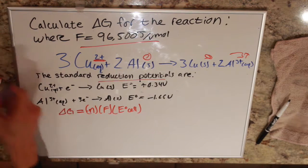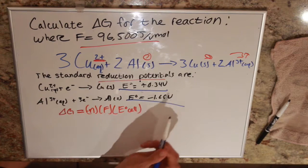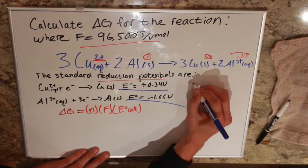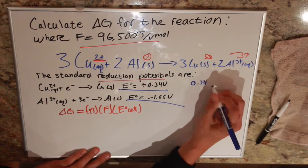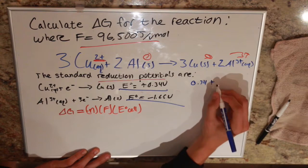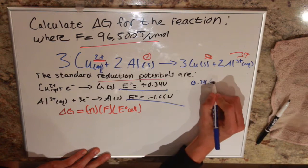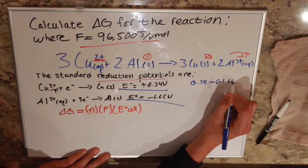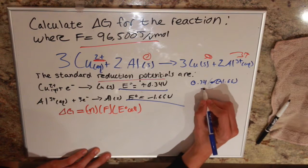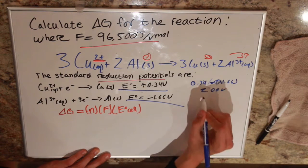So we just go over to this chart over here, and we can see that these are our two values. So we just do 0.34 plus, because it's going to be minus minus 1.66, it's going to give us a plus. So our cell potential is 2 volts.